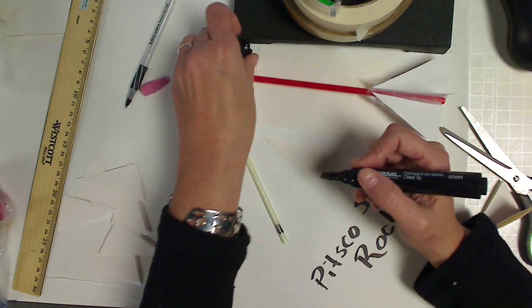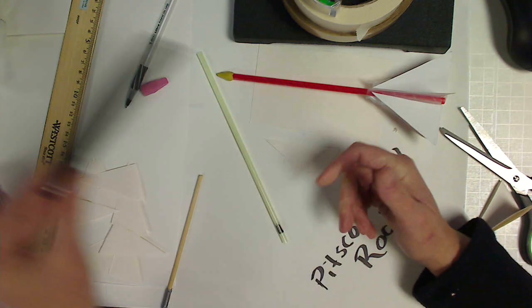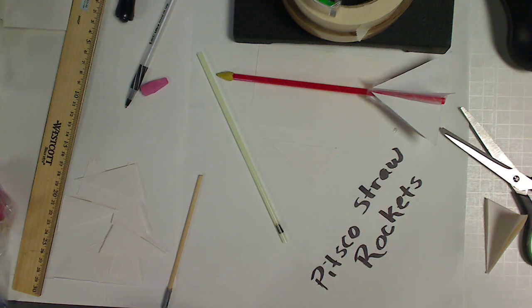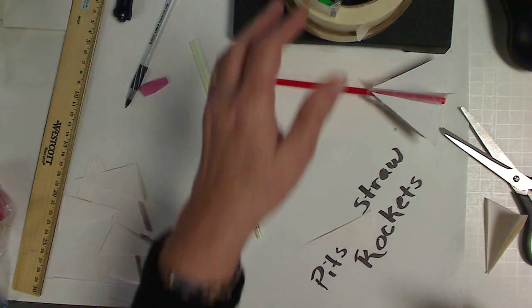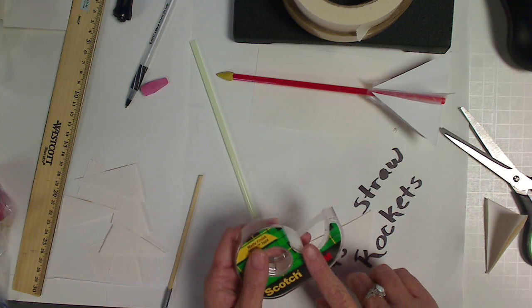So now I have four lines marked of where I want to place my fin. However, smaller children, younger children, may not have the dexterity in their hands to do that. And that's fine if they don't. The other thing that's a must have is some tape.